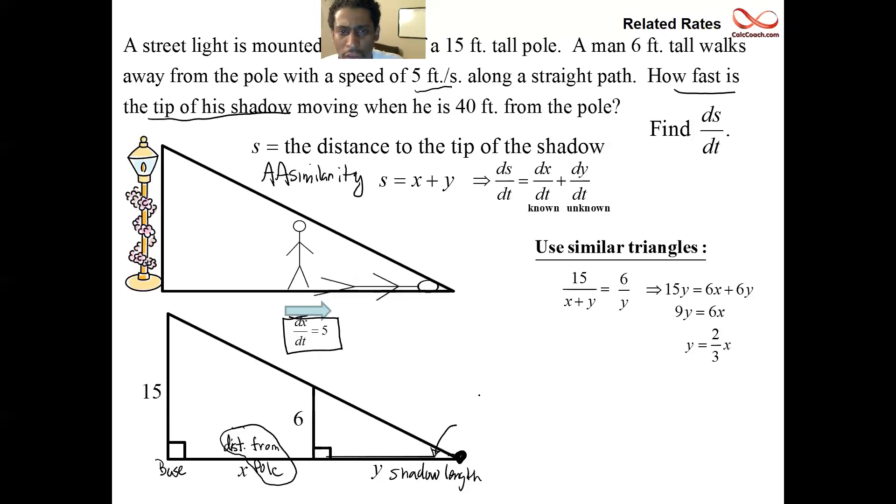And so now we know that Y is 2/3 of X. If we want to get DY/DT, then we'll just take the derivative of this equation. And so if we take the derivative of Y equals 2/3 X, time derivative, we get DY/DT equals 2/3 of DX/DT. So we didn't know what DY/DT was, but now we do. We know that it's 2/3 of whatever DX/DT was. And we know what DX/DT is. We know that DX/DT is 5. And so 2/3 times the 5, we'll get that DY/DT must be 10/3.